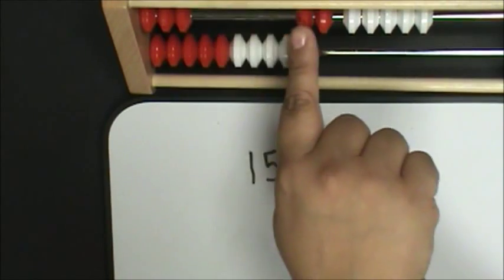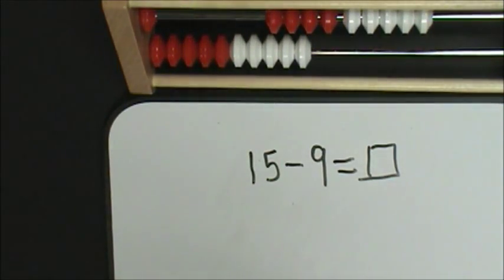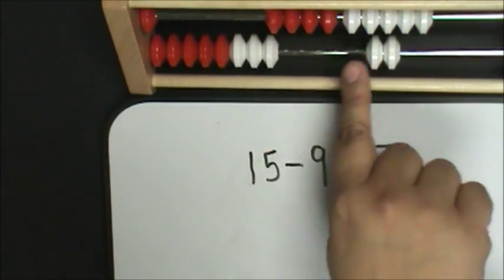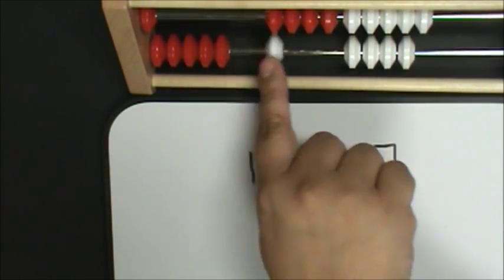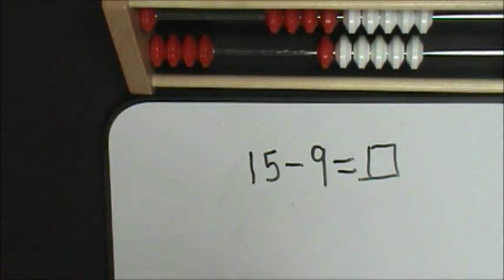Five, six, seven, eight, nine. Then the student will slide over enough beads until they get to 15: nine, ten, eleven, twelve, thirteen, fourteen, fifteen. So fifteen minus nine equals six.